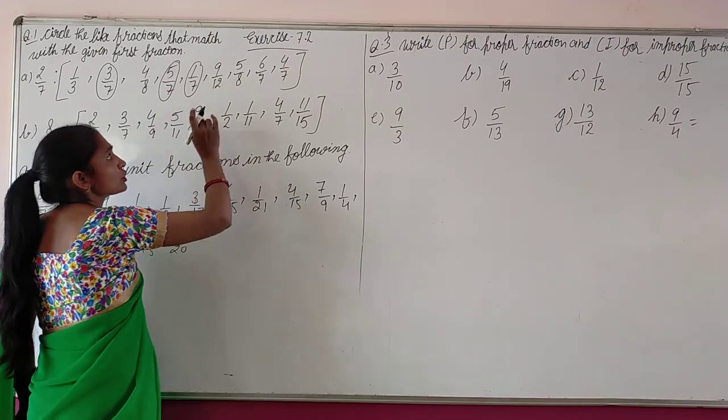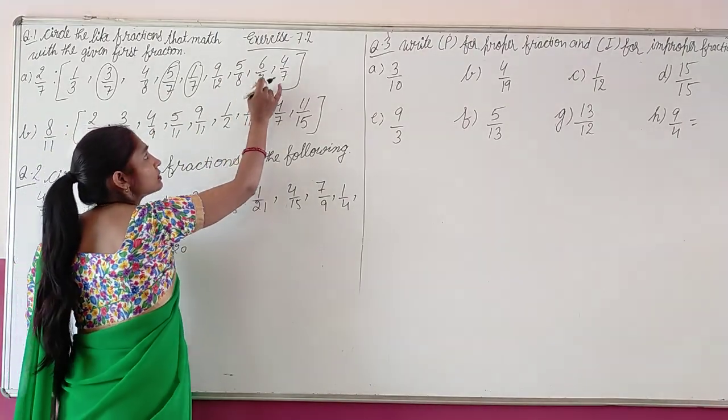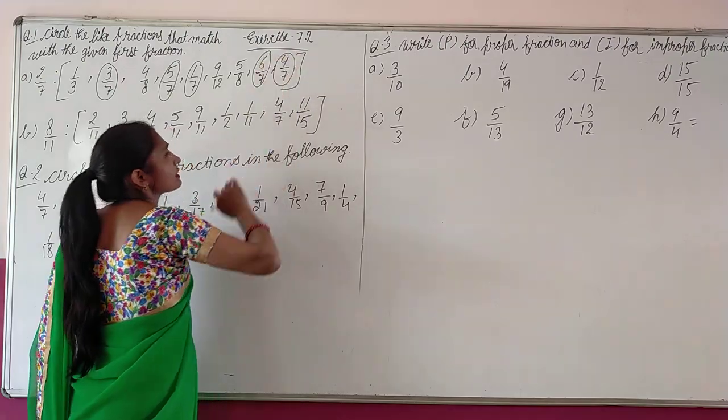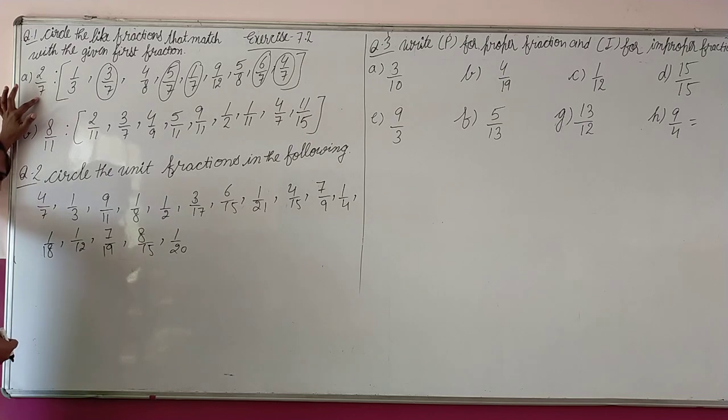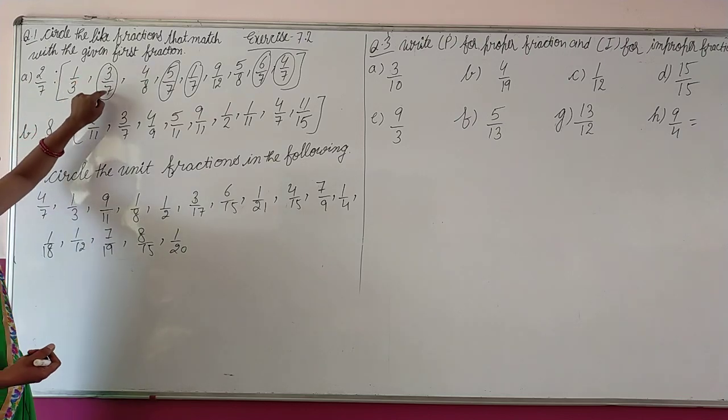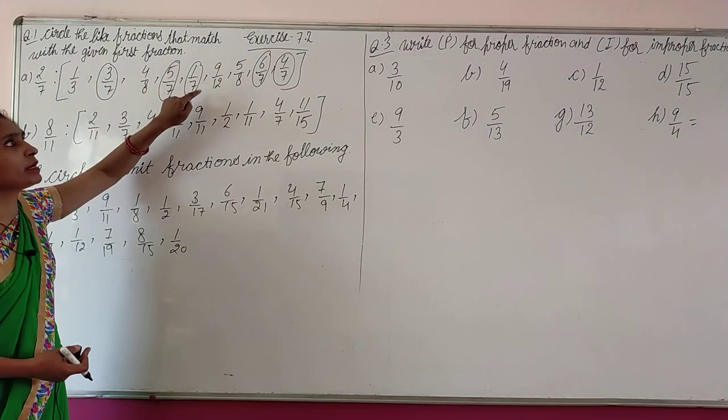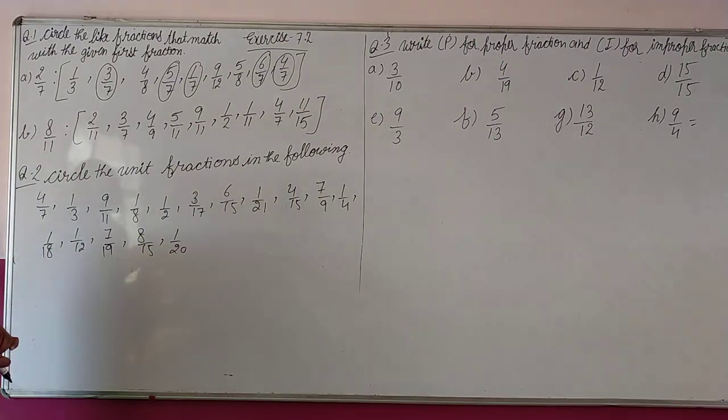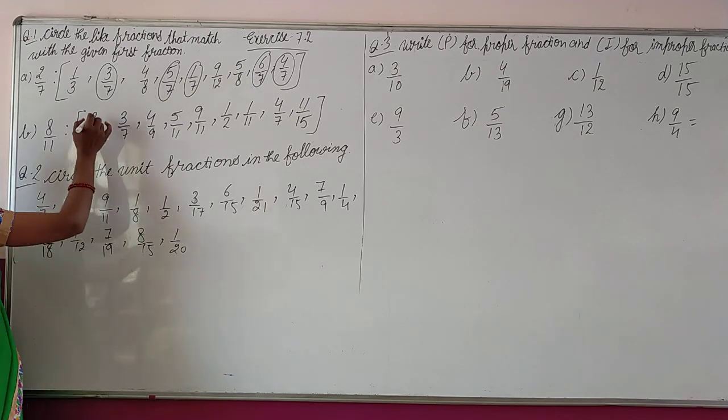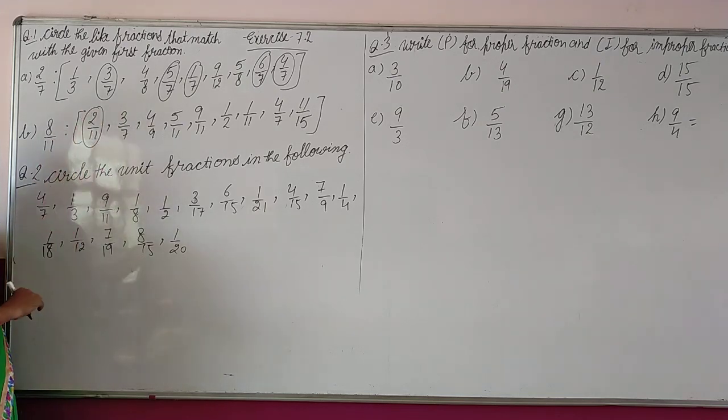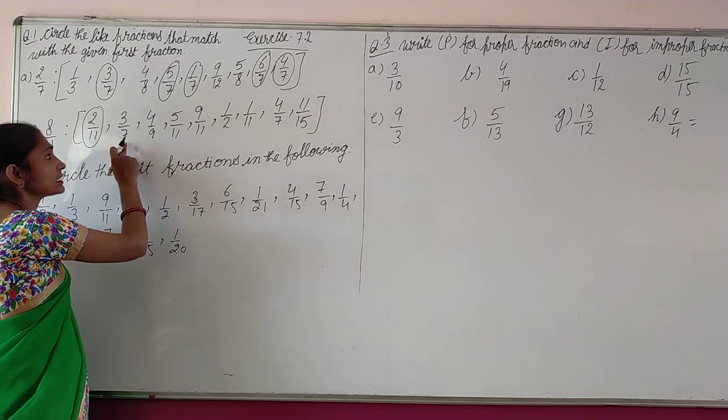For 4 by 7: 12, no. 8, no. 7, yes. And 4 by 7. So unhun fractions ko hume circle karna hai jis me denominator 7 hota. Yahan nahi hai, kya hota na hai.